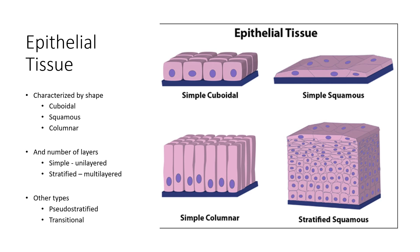Epithelial tissue is characterized several ways. One way to characterize epithelial tissue is by shape. It can be cuboidal or cube-shaped, squamous or flat, and columnar-shaped, which is just rectangular and long. It can also be characterized by the number of layers. Simple is unilayered, and stratified is multiple layers. There are also other types such as pseudostratified and transitional.